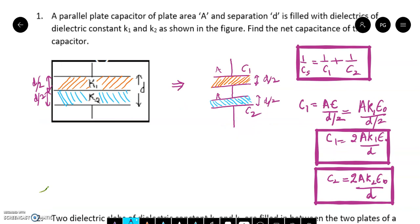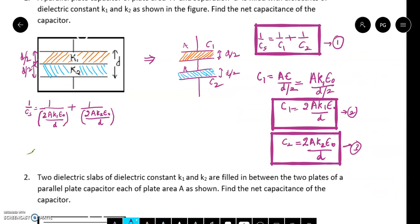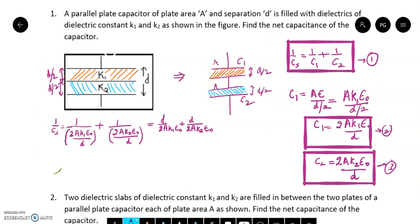Similarly, I write the capacitance of the second capacitor. The only difference is K1 is replaced by K2. So C2 equals 2A·K2·epsilon-naught upon D. Now I will put these values — relation 2 and relation 3 — into relation 1. I get: 1 upon Cs equals 1 upon (2A·K1·epsilon-naught / D) plus 1 upon (2A·K2·epsilon-naught / D). On solving this, I get D upon 2A·K1·epsilon-naught plus D upon 2A·K2·epsilon-naught.